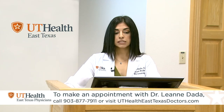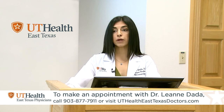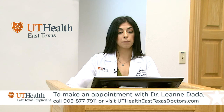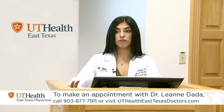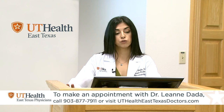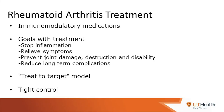Treatments for rheumatoid arthritis primarily involve addressing the underlying problem. We use medications that modulate the immune system to stop it from damaging joints and other organs. Our goals are to stop the inflammation, relieve symptoms, prevent joint damage, destruction, and disability, and reduce long-term complications. In rheumatology, we use a treat-to-target model, meaning we follow up with patients rapidly and aggressively to make sure their disease is in remission and keep them under tight control.